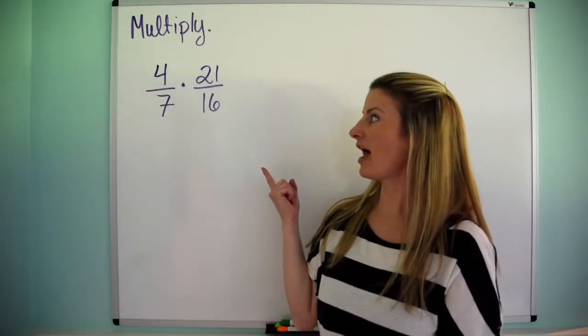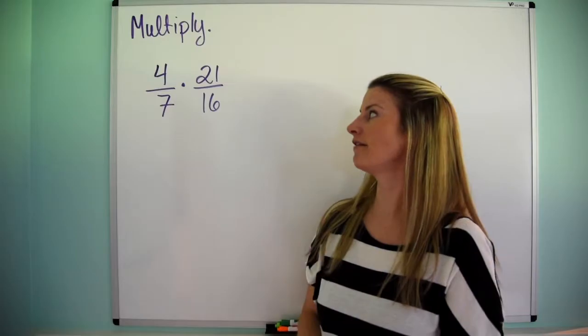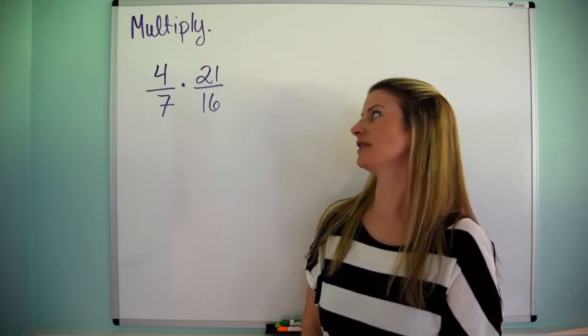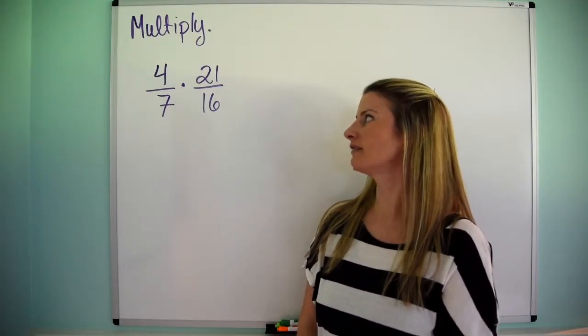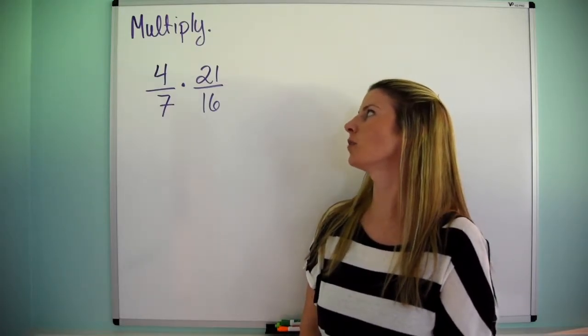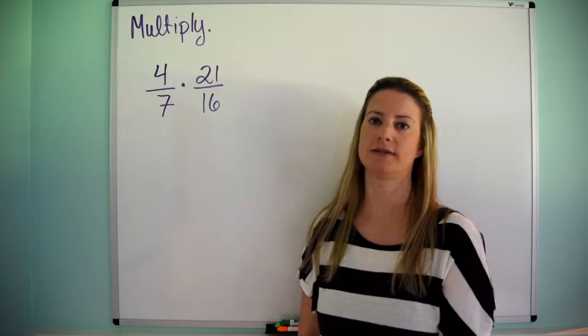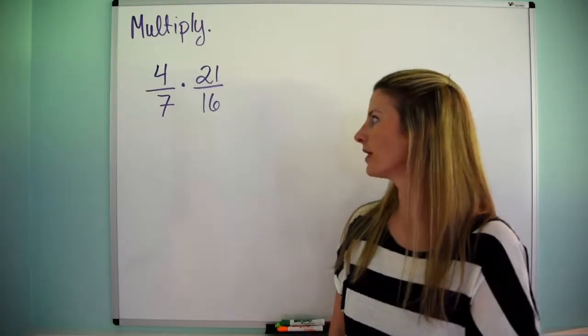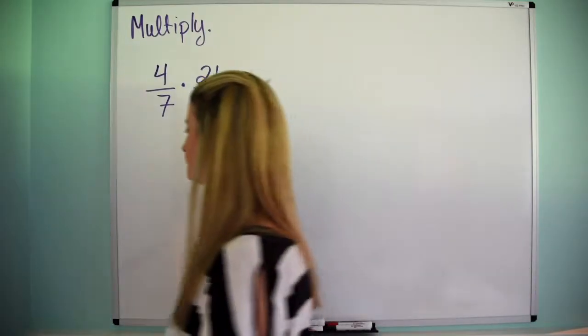Let's multiply 4 over 7 and 21 over 16. So what is 4 sevenths times 21 sixteenths? Okay, here we go.